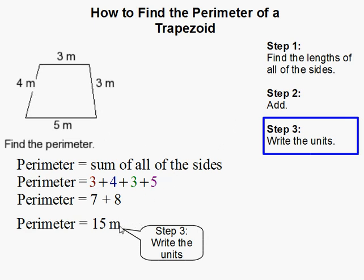So make sure you don't put squared here. You just say 15 meters, not meters squared. And that completes our problem.